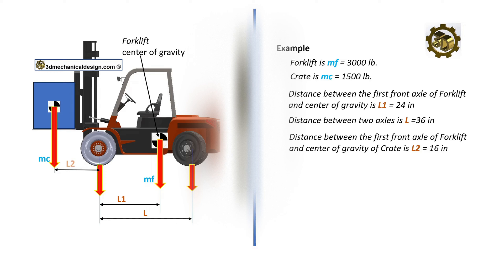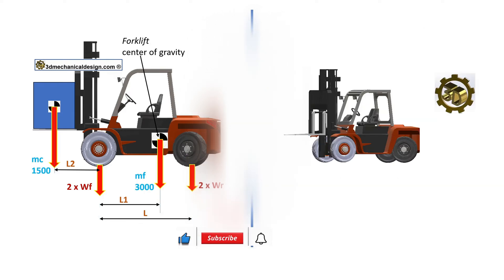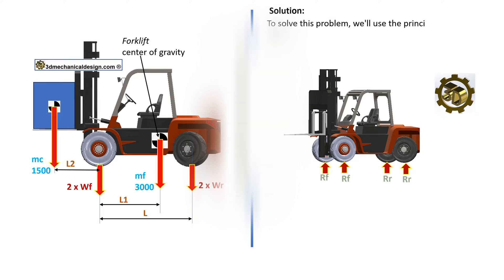Our task is to determine the reaction on the two front wheels, RF, and the rear wheels, RR. To solve this problem, we'll use the principles of static equilibrium, which states that the sum of forces and the sum of moments must equal zero.